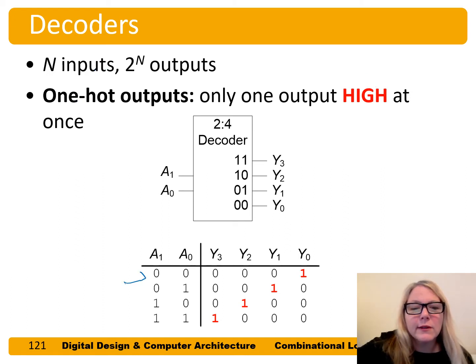So if the inputs are 0, 0, the Y0 output is true, and only that output. If the inputs are 0, 1, the Y1 output is true. If the inputs are 1, 0, Y2 is true, and only Y2. And if the inputs are A1 and A0 are both 1, then the output Y3 is 1, and only that output. And so you can see this basically decodes the binary value. This is 0, 1, 2, and 3.